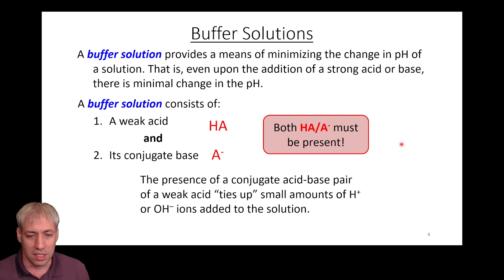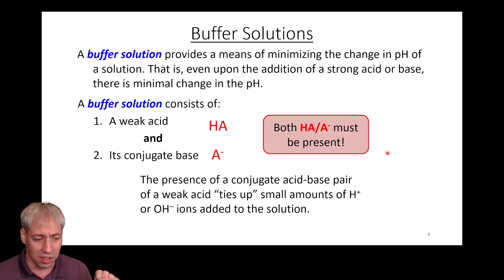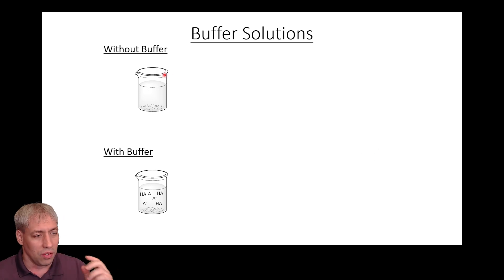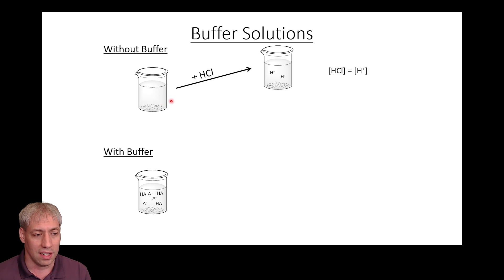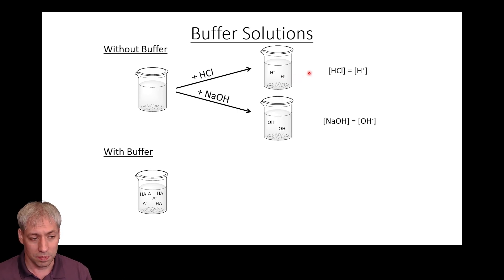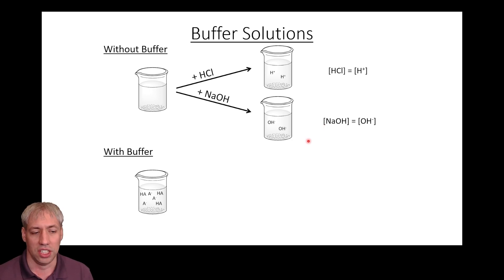The way buffers work is you have a solution and you add a strong acid or base to it. That strong acid or base is going to try to change the pH, but the buffer ties up those protons and that OH⁻ in the form of this weak acid conjugate base pair. Without a buffer, in pure H₂O, whatever concentration of HCl you add, that's the concentration of H⁺ in solution — it goes directly to changing the pH.